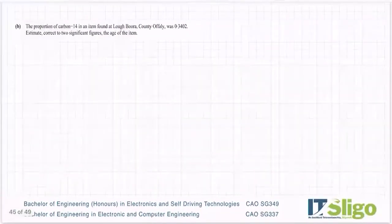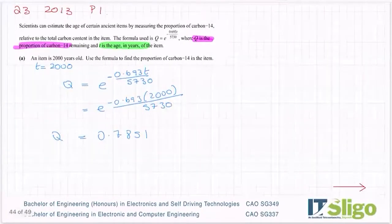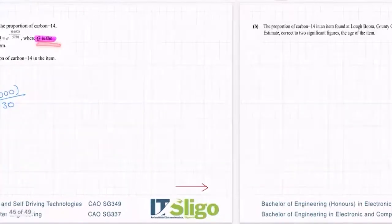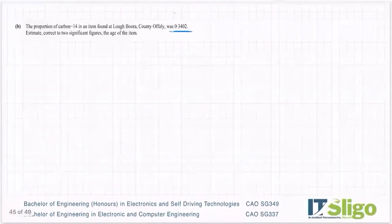Part B, the proportion of carbon-14 in an item found at Lough Boora, County Offaly was 0.3402. And I know from highlighting that Q is the proportion of carbon, so that must be a Q figure. Estimate correct to two significant figures the age, so I need to solve for T.